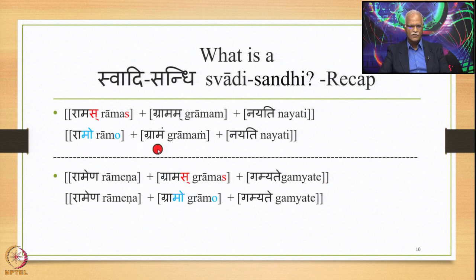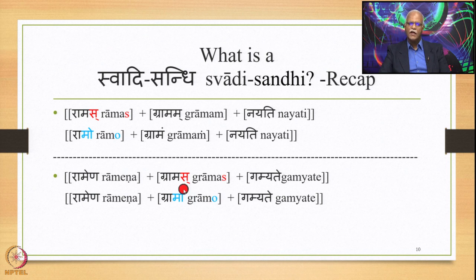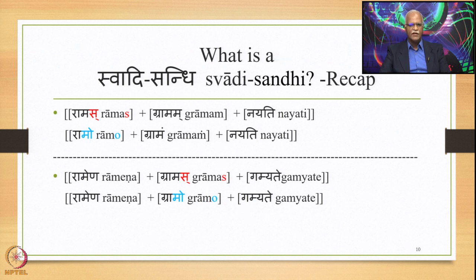This M substitution is a general Sandhi and is not categorized under Swadhi-Sandhi. Similarly, if we have 'Ramena Gramas Gamyate' (passive voice), the output is 'Ramena Gramo Gamyate.' The same rule applies: Sa is substituted by Ru, then Ru is substituted by U, and A plus U becomes O, giving the finally derived sentence 'Ramena Gramo Gamyate.' These are concrete specific examples of Swadhi-Sandhi.